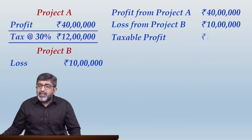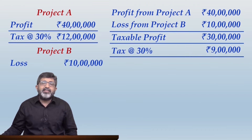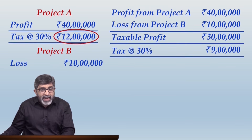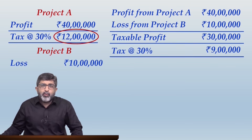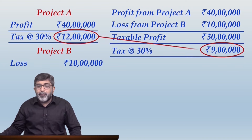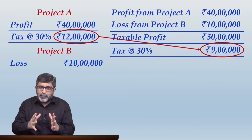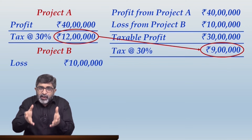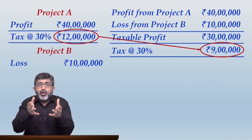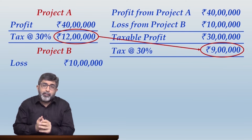This loss of Project B will be set off against the profit from Project A. So what will be the implication? Profit from Project A is 40 lakhs; you will set off the loss arising from Project B, that is 10 lakhs, and the net taxable profit will now be only 30 lakhs. So the company will now pay tax at the rate of 30 percent not on 40 lakhs but on 30 lakhs. Earlier, before we considered the loss of Project B, the tax liability of the company was 12 lakhs; after considering the loss arising from Project B, the tax liability of the company got reduced to rupees 9 lakhs. The reduction in tax liability from 12 lakhs to 9 lakhs is what we call as tax savings arising because of Project B.